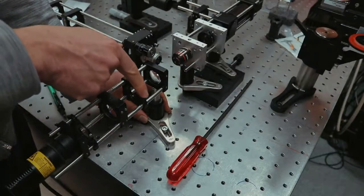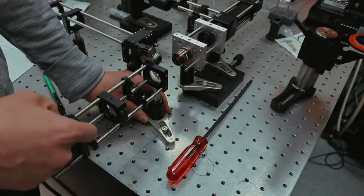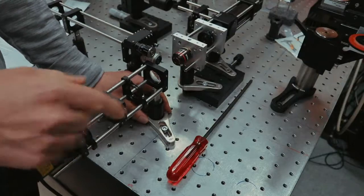Progressively close the field diaphragm until an image of its edges appear on the camera. The image of the field diaphragm should appear sharp and in focus.